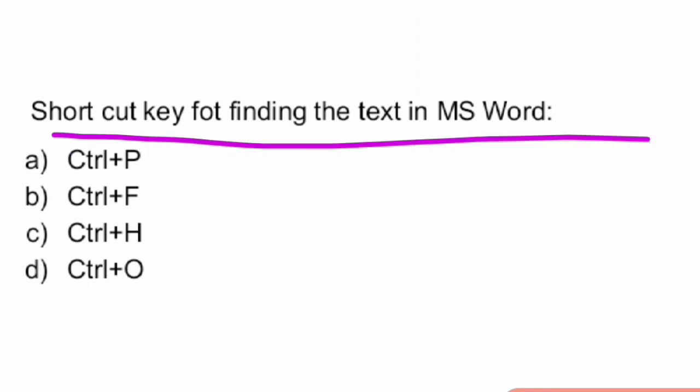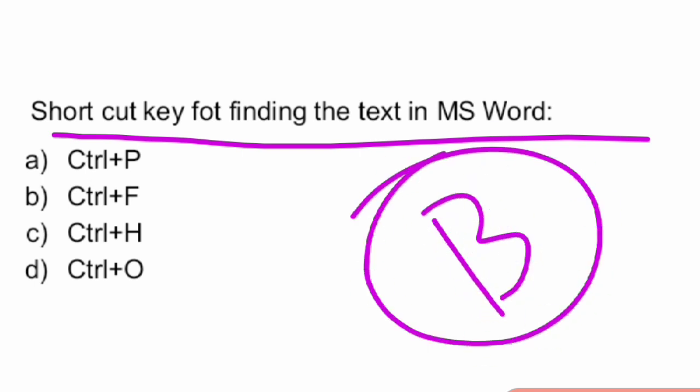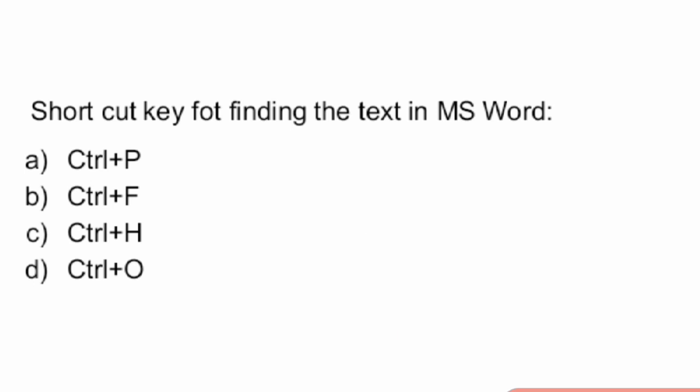Next question: what is the shortcut key for finding out text in MS Word? The answer is Control plus F. Control plus F is the shortcut key for finding text in MS Word. Option B is the right answer.